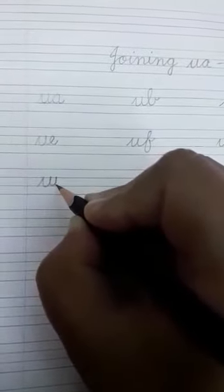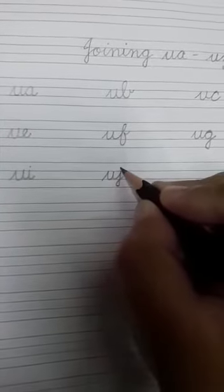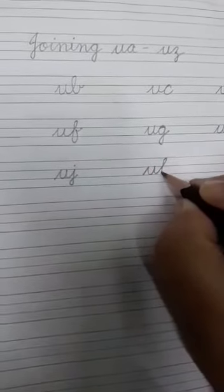What comes after G? H. So U-H. After H we will join U with I. U-I, U-J. Now we will join U with K: U-K, U-L. After L we will join U with M.